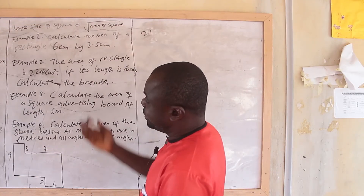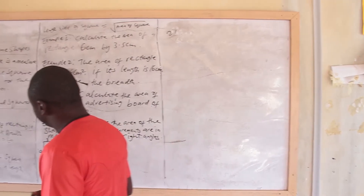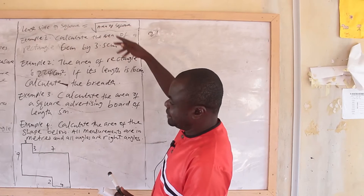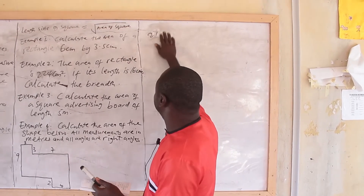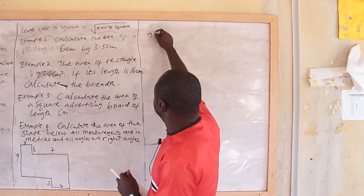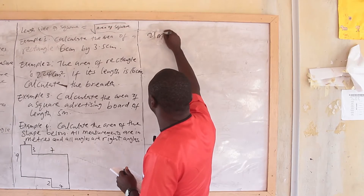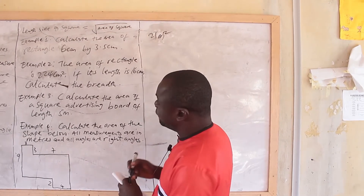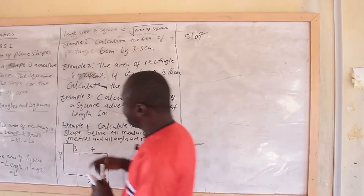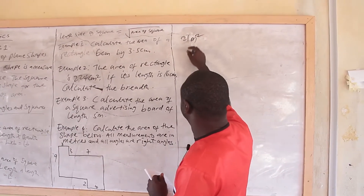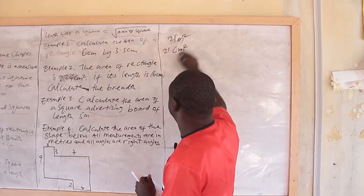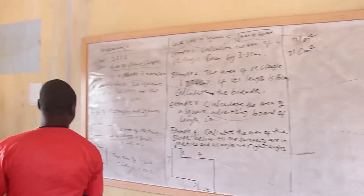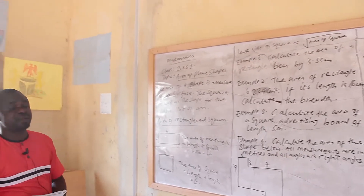For example, if the values they are giving you are in meters and you get 21, it should be 21 meters squared. Or if the number given to you is in centimeters, that means it should be 21 centimeters squared. That is what we mean by saying the square is used as the shape for the basic units of area.